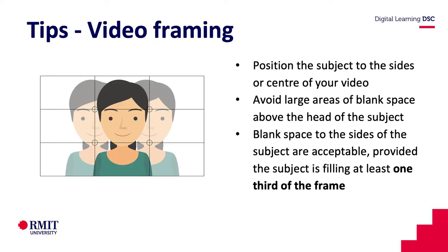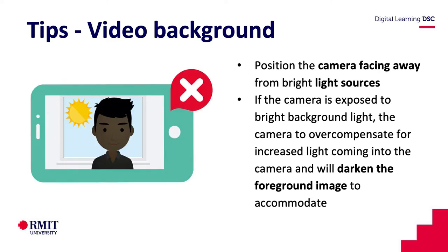Moving on to framing — when you want to consider framing, you'd want to position the person to the center, left, or right of frame, so there's not too much blank space and the subject is the focus. Another tip, which I'll show you later when I fix up the current shot, is to avoid having bright backgrounds, because it will make the foreground a little bit darker.